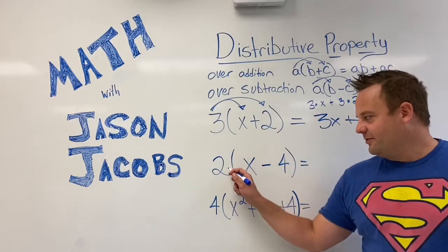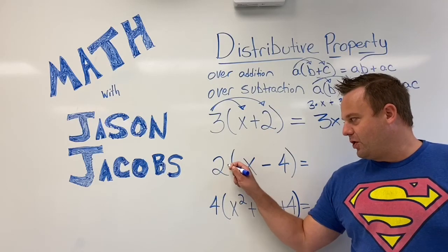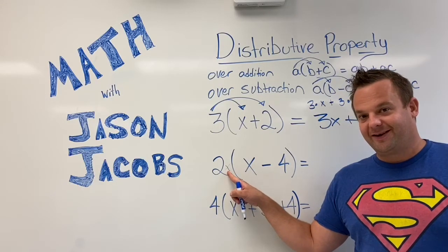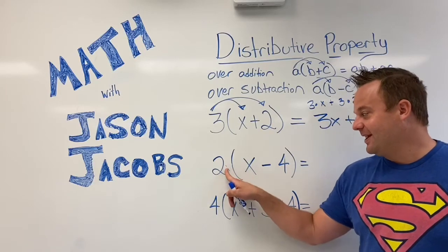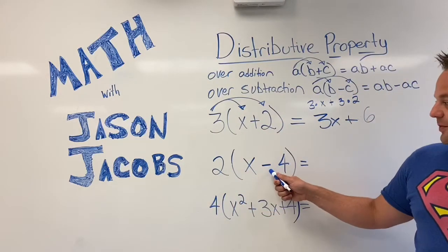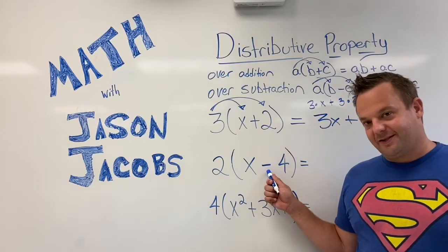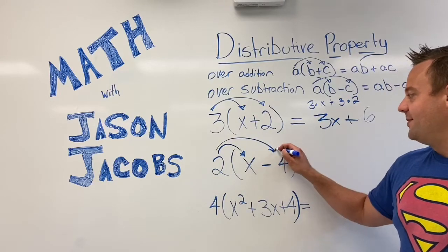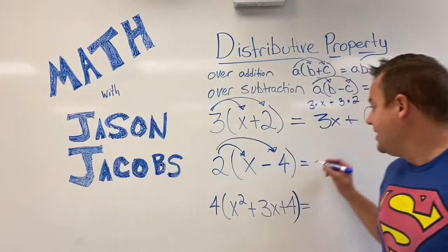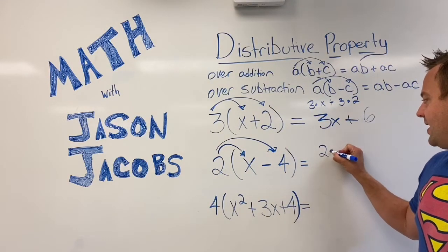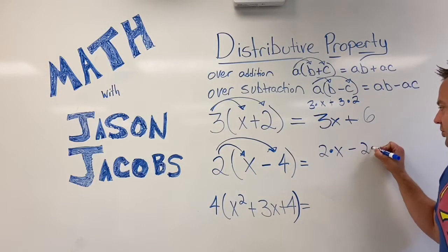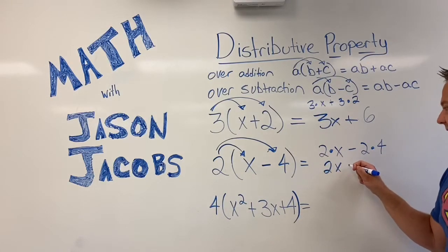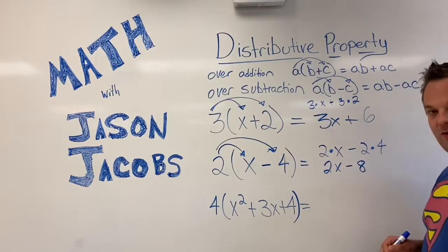And remember, when it's right next to the parentheses, that means you're multiplying. They might even have a multiplication symbol here. Why do you think we don't have a multiplication symbol here? Because it kind of looks like the variable X, right? So anyway, this is distributive property over subtraction because there's a subtraction sign here. 2 times X minus 2 times 4. I find the arrows really help, guys. So 2 times X minus 2 times 4. So that simplifies to 2X minus 8.